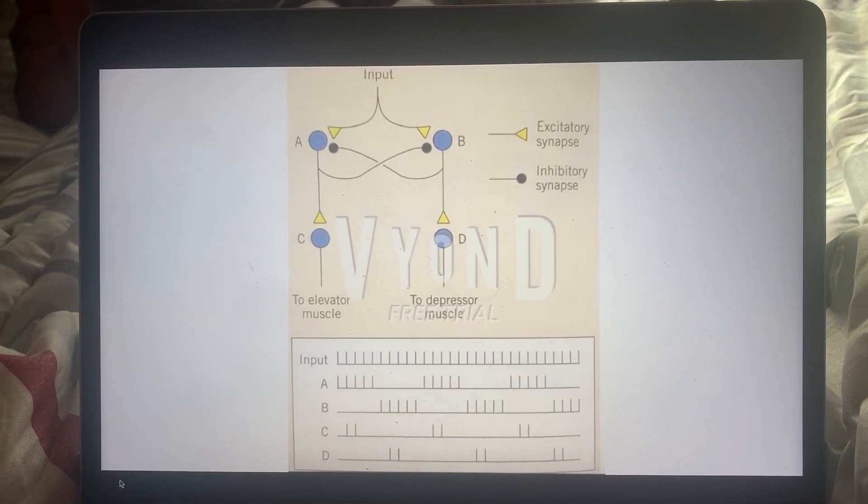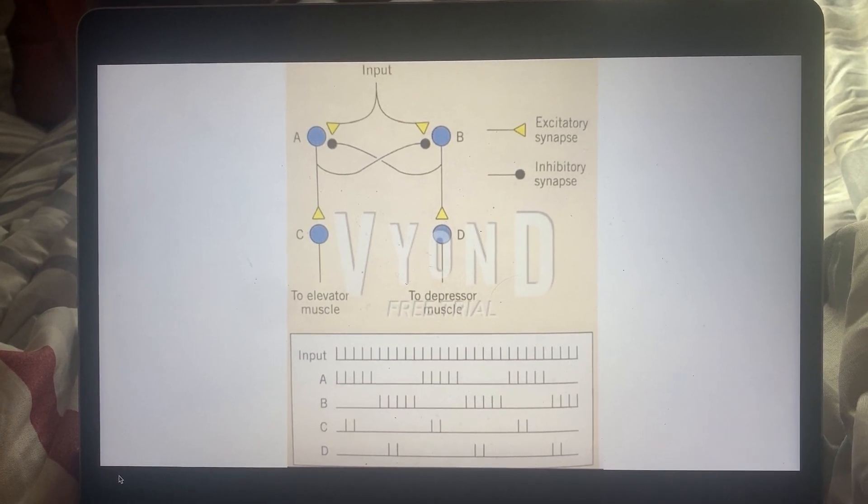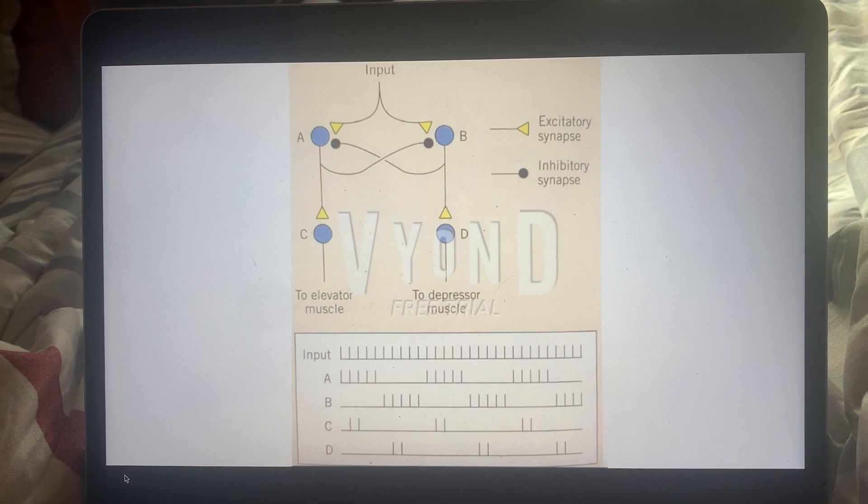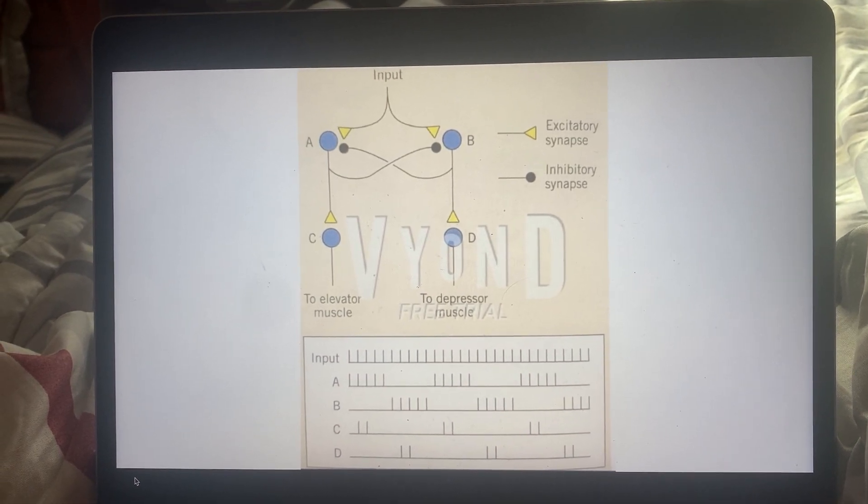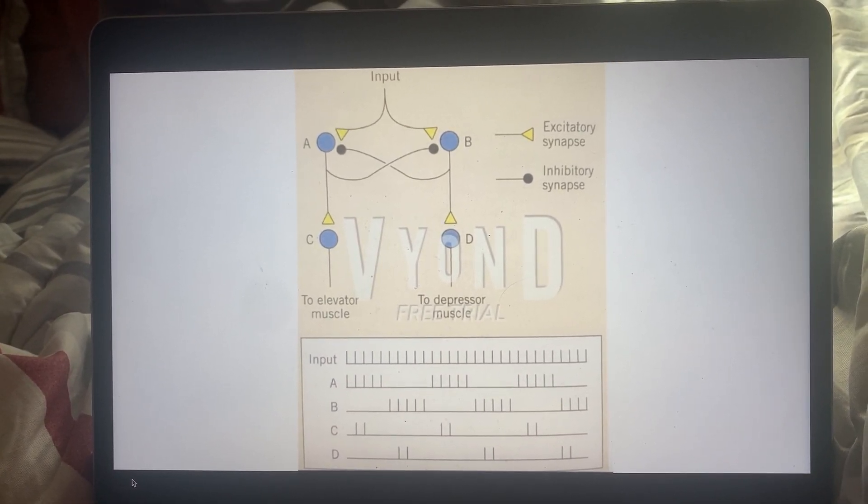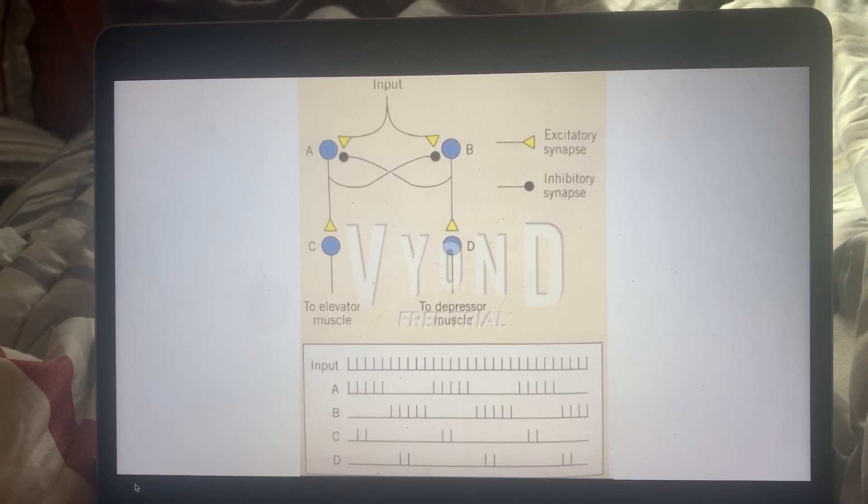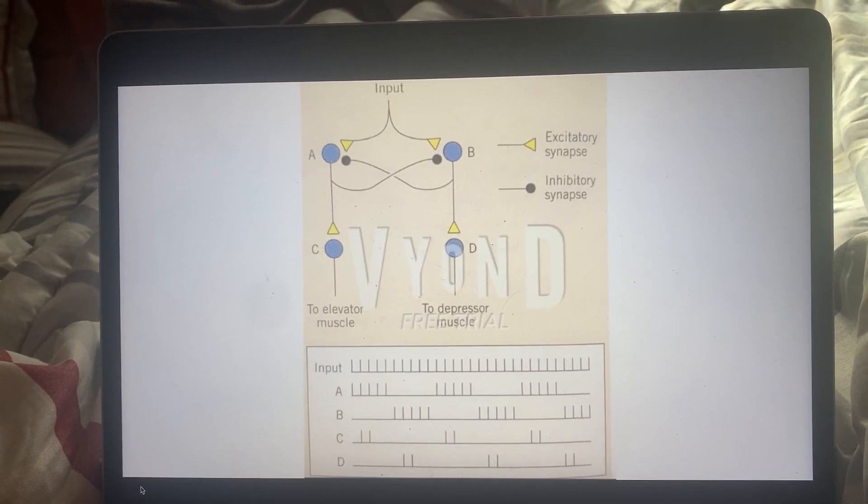We see there's a muscle that leads to elevation and one that leads to depression. So an input comes in, but once this input comes in, according to this picture, we see that one synapse is going to be disproportionately favored.